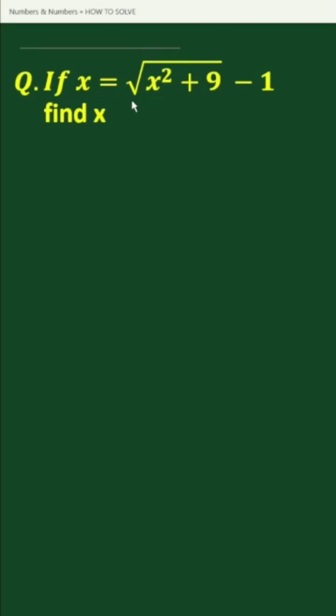If x equals square root of x squared plus 9 minus 1, find x. Transposing minus 1 to the left hand side, we can write this as x plus 1 equals square root of x squared plus 9.